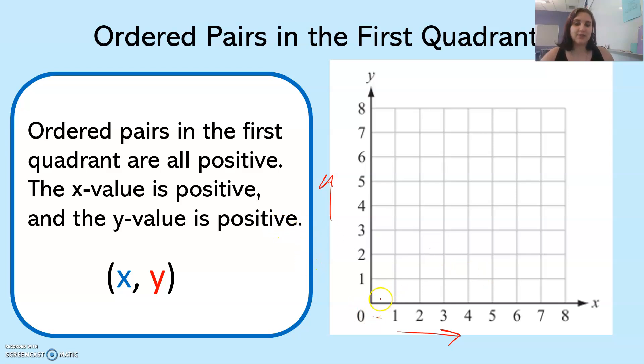X values go along the x-axis which is here in blue, and y values go along the y-axis which is in red.